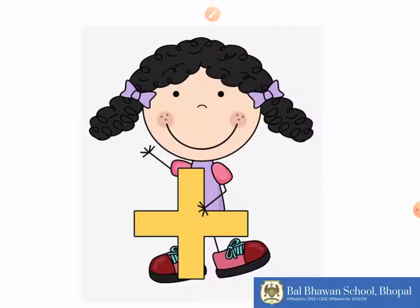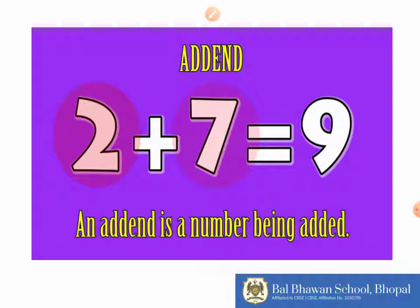Addition is represented by a plus sign. So when we add two numbers, there has to be a plus sign between them. The numbers that are added are called addends.